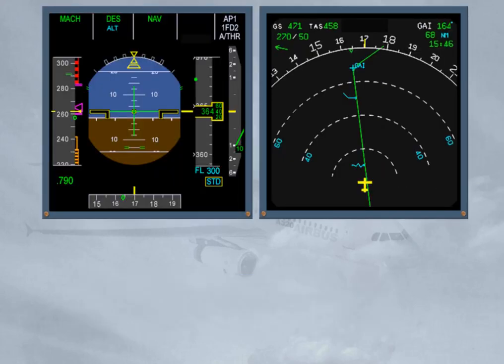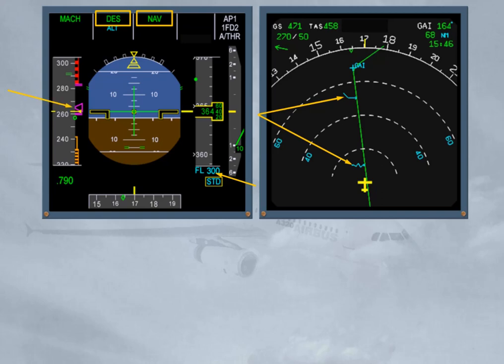Rule 2: FMS monitoring in managed modes. When navigation mode is used, monitor the PFD FMA for mode status — armed or engaged — and monitor the ND for the expected trajectory and cross-track. When climb or descent modes are used, monitor target altitude and target speed, and monitor VDEV in descent and location of pseudo-waypoints on the ND.